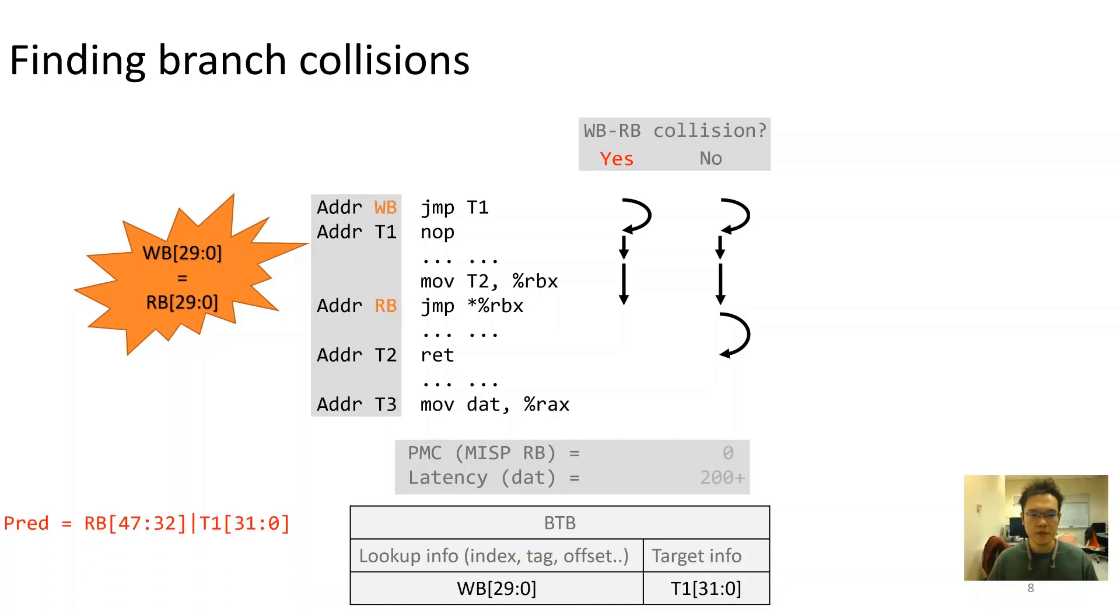As a result, BPU will retrieve the same BTB entry using the previous target T1's lower 32 bits, concatenating with RB's higher bits as the prediction target. If this prediction target is equal to the address T3, speculative execution will happen at the data accessing gadget. Although this transient execution will eventually be squashed, branch misprediction will happen and transient execution could be finished, resulting in data being cached and could be accessed with low latency.